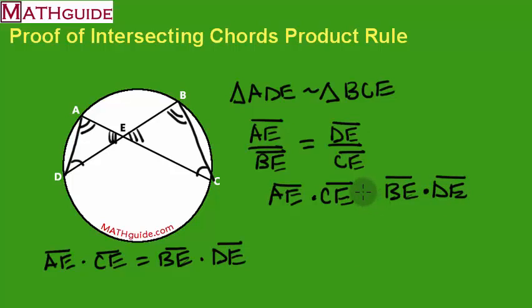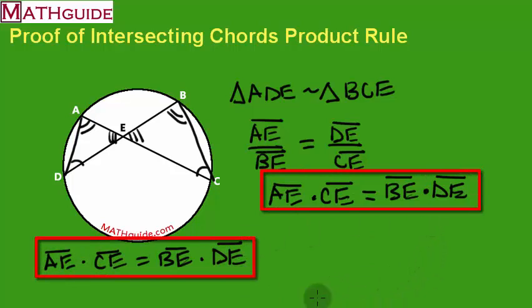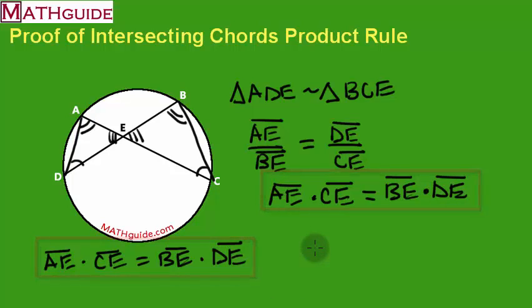And I know that those two cross-products are equal. So this cross-product and that cross-product are equal. And you can see that I have proven that this relationship is indeed correct. So the relationships are the same and I definitely know that this product rule for intersecting chords does certainly hold true.